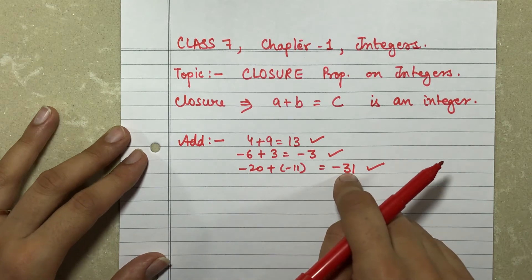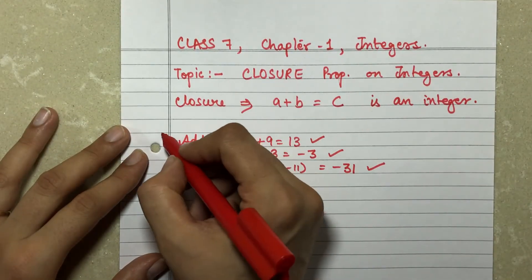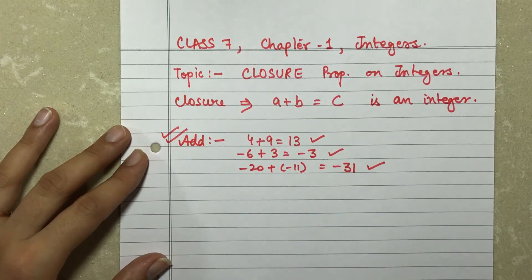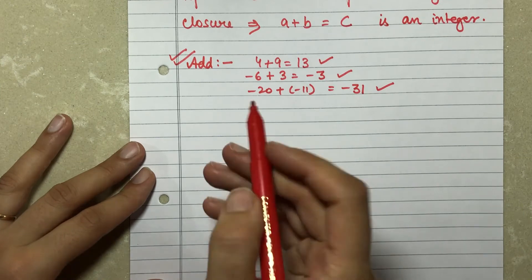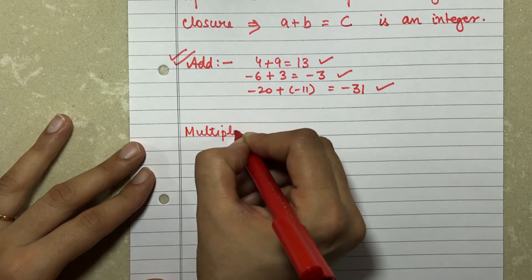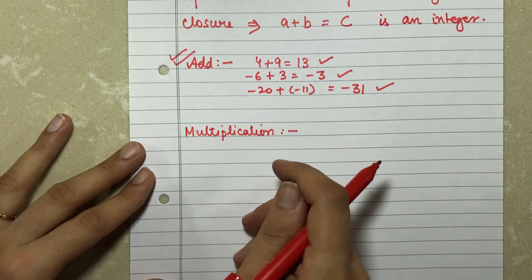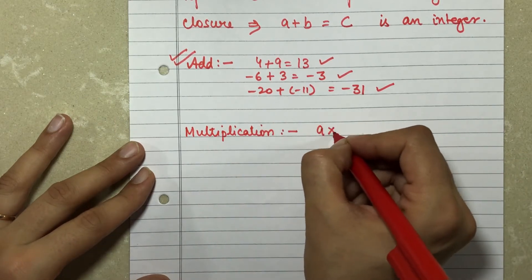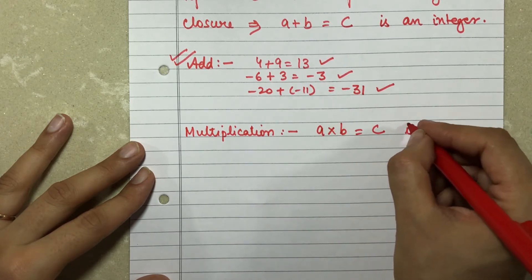Therefore, closure property stands true for addition. Now let's move to multiplication. For multiplication, it should be that a into b, whatever I get, my answer C is also an integer.